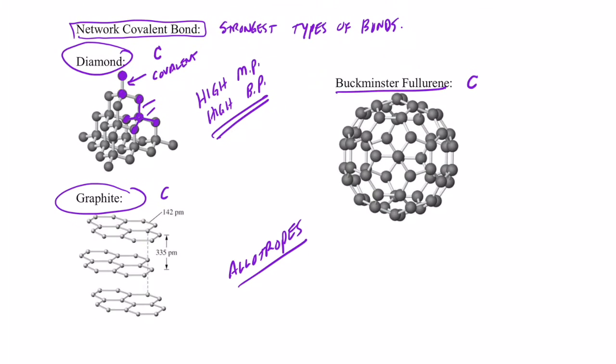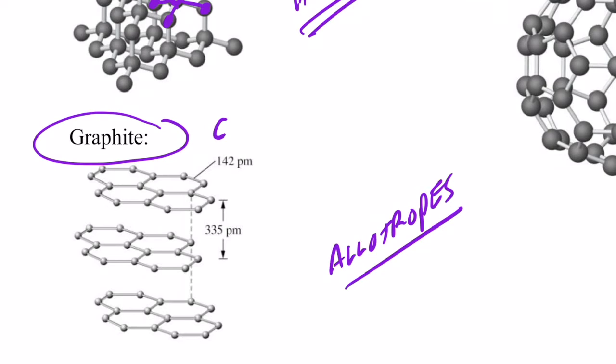Now graphite, an allotrope of carbon, is a little bit different. We have layers of carbon atoms. So this is a carbon atom here. And you can see it's covalently bonded to this carbon atom and this carbon atom. Here's a carbon atom over here. It's covalently bonded to this one and this one. This carbon atom is covalently bonded to this one, this one, and this one. Those are very, very, very strong bonds and they're very, very difficult to break.